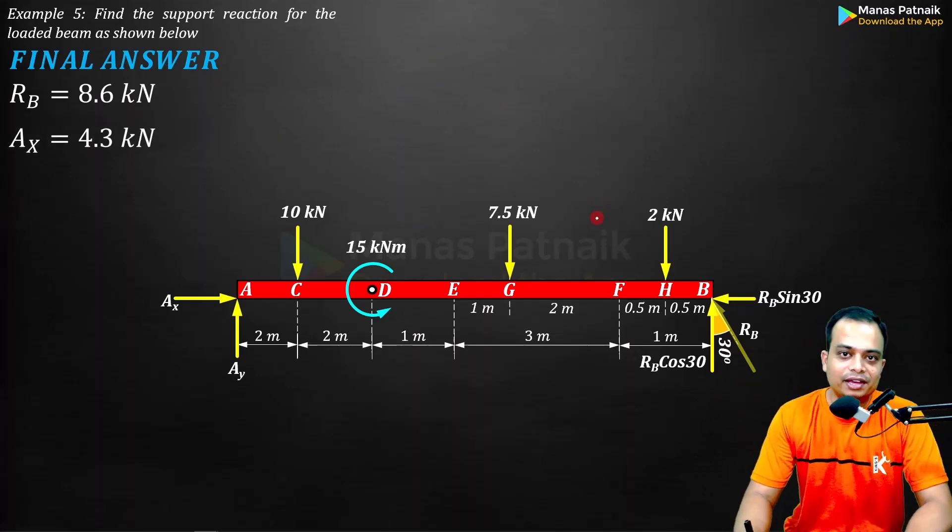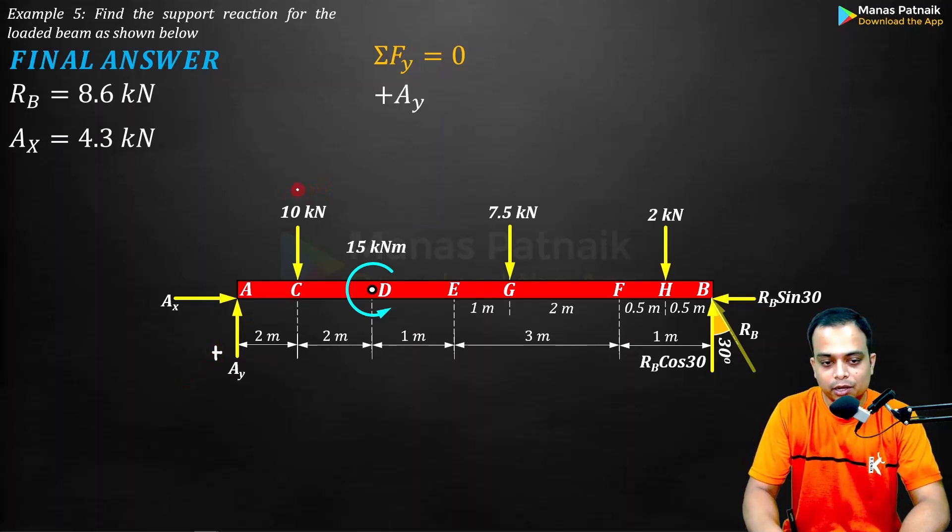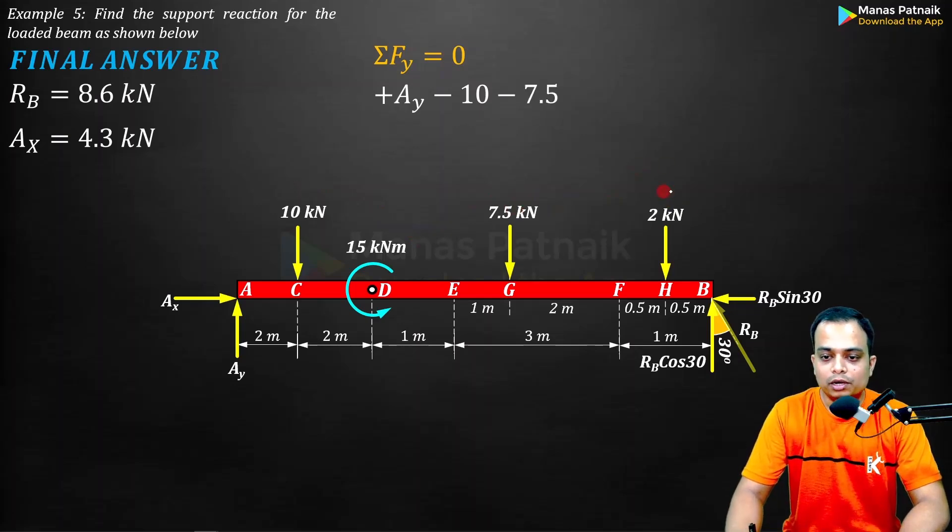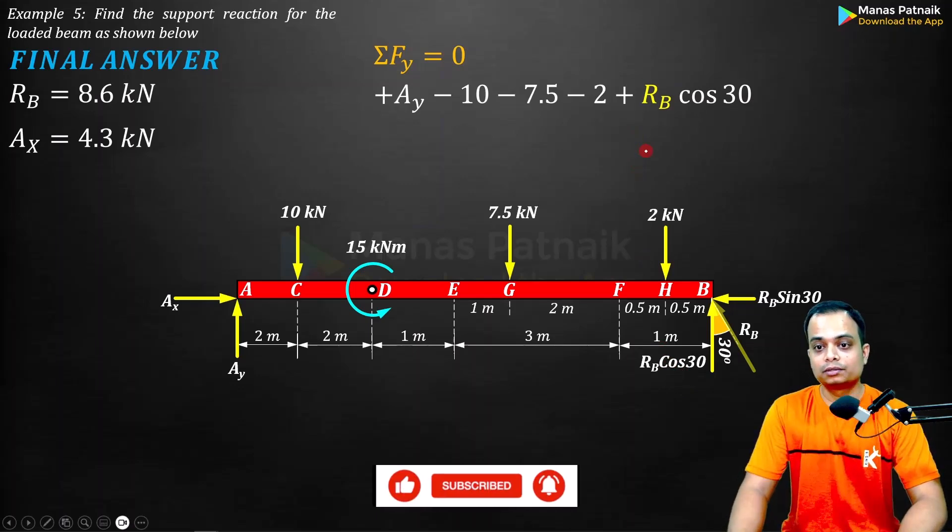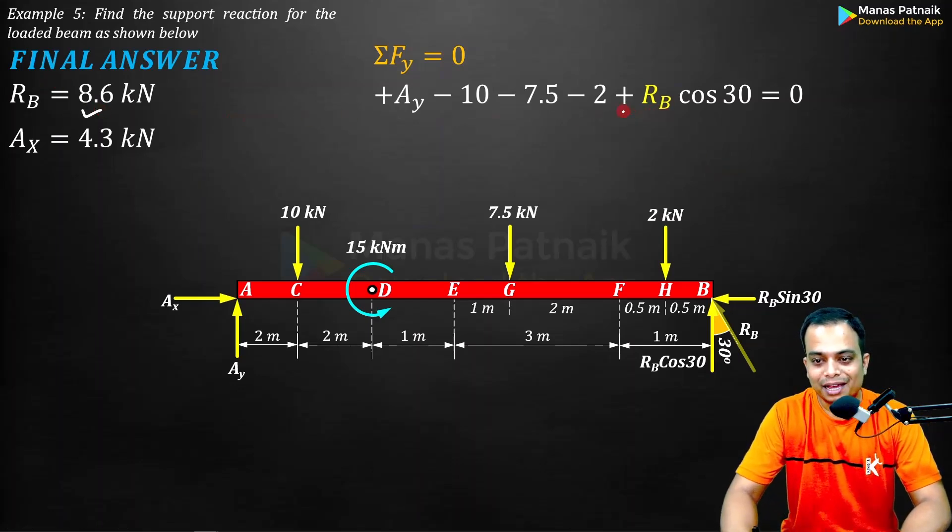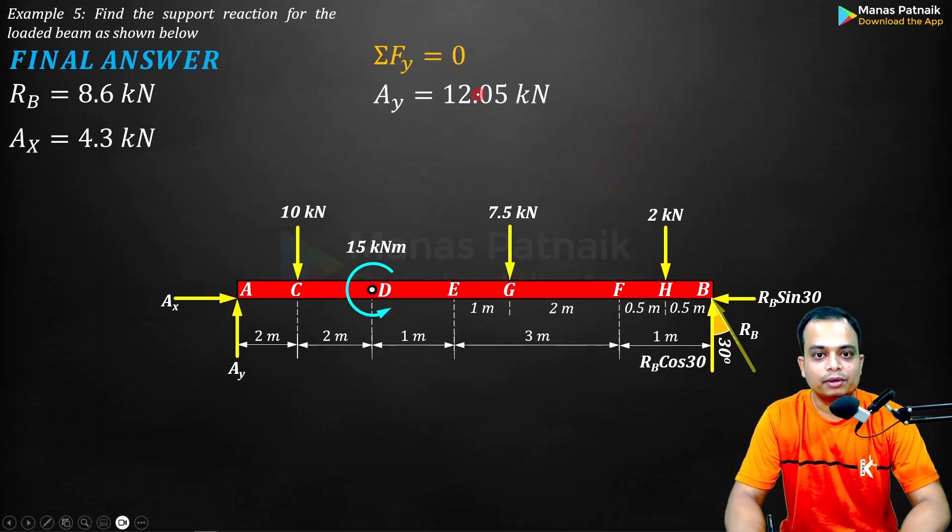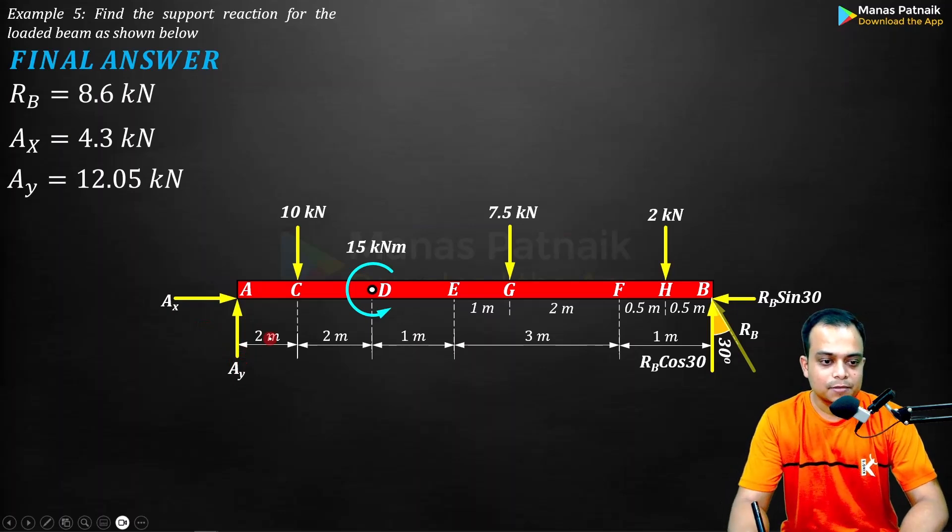Let me go for summation Fy equals zero. There are plenty of forces to cover. First of all, Ay upwards, that's why positive. Ten downwards, negative. 7.5 downwards, negative. Two downwards, negative. RB cos 30 upwards, positive. Any other vertical force? No. Equate it to zero. We know the value of RB is 8.6, so plug in this value and solve for Ay. This is what you get, one more answer.